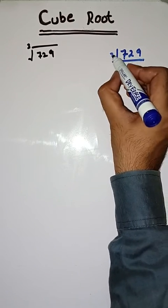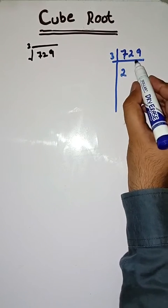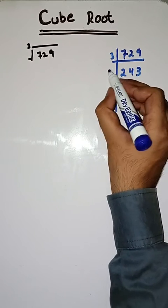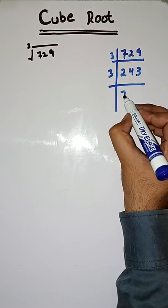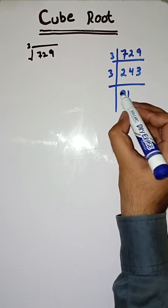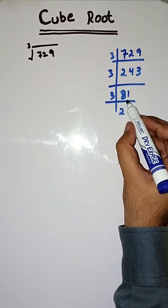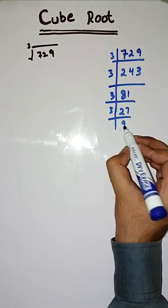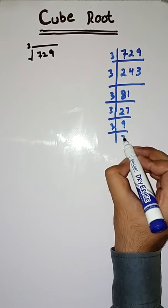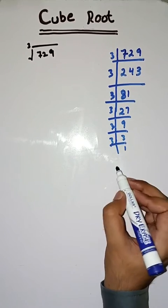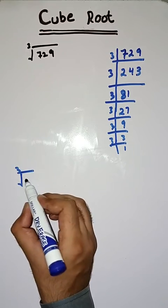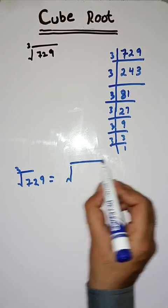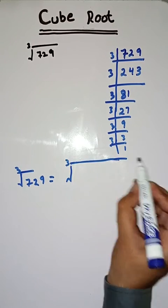We start with 3. Dividing step by step: 3 into 729, then 3 into 243, then 3 into 81, then 3 into 27, then 3 into 9, and 3 into 3. So the cube root of 729 is equal to the cube root of its prime factors.